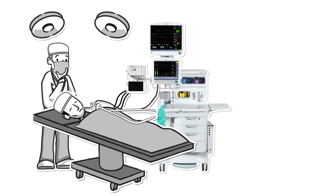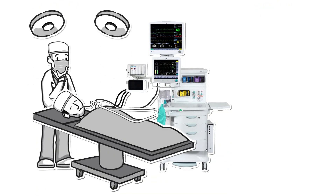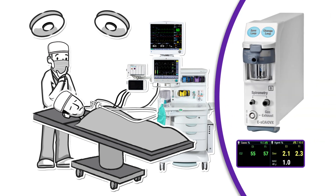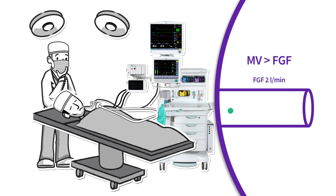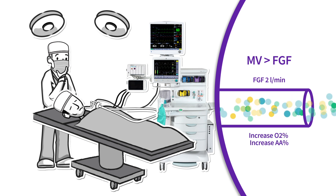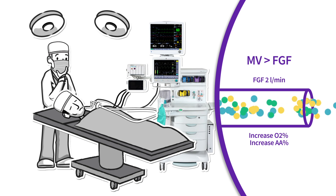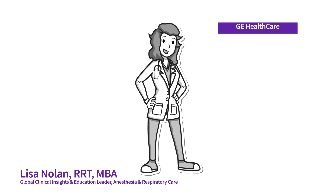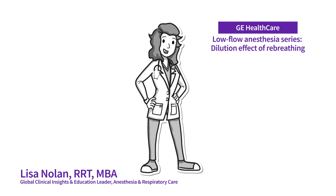So, how do you adjust for effects from the dilution effect of re-breathing? Use a gas analyzer that measures both inspired and expired gases and anesthetic agent. Titrate oxygen and anesthetic agent concentration for a given fresh gas flow and patient minute ventilation, as this may require a higher vaporizer and oxygen setting. Understanding the dilution effect of re-breathing is as easy as that on GE Anesthesia Delivery Systems.